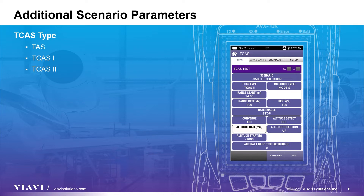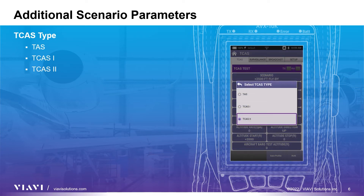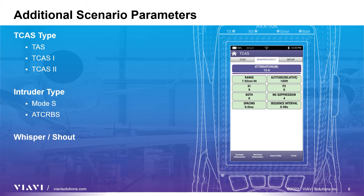However, procedures may dictate that additional parameters need to be adjusted, so we will briefly discuss the TCAS type and intruder type fields. All of the CAN scenarios configure the TCAS type to TCAS2 and the intruder type to MODE-S. This setting drives the Surveillance and Broadcast Monitor tabs to be displayed. If your task list or test procedure references whisper shout steps, you will need to change TCAS type to B-TAS, which is the Traffic Advisory System, or to TCAS1. The intruder type changes to AT-CRABS and the Surveillance and Broadcast tabs are replaced by a new Whisper Shout tab. This also happens if TCAS type is left on TCAS2 and intruder type is toggled to AT-CRABS.